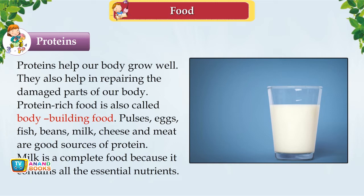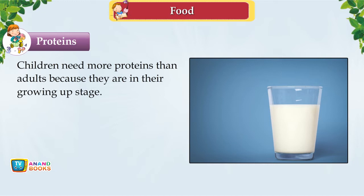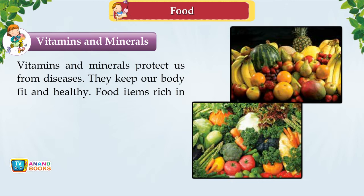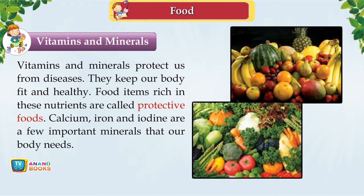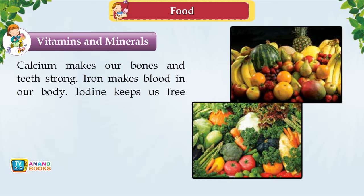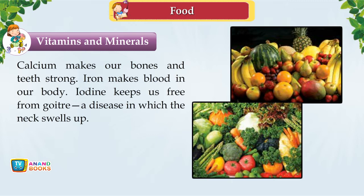Vitamins and Minerals protect us from diseases and keep our body fit and healthy. Food rich in these nutrients is called protective food. Calcium, iron and iodine are important minerals. Calcium makes our bones and teeth strong; iron makes blood; iodine keeps us free from goitre, a disease in which the neck swells up. Vitamins and minerals are found in fruits, vegetables and milk.